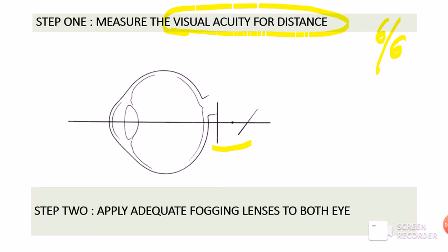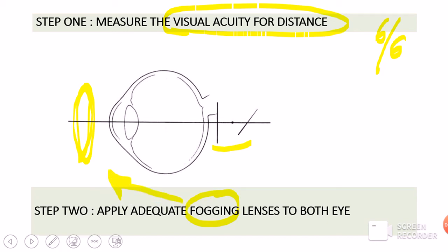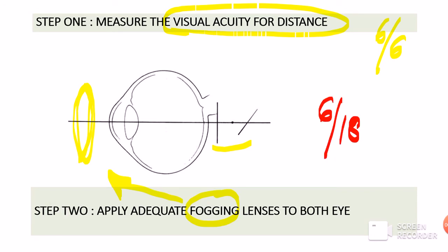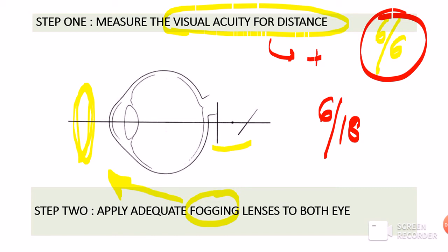The next step is to apply adequate fogging lenses to both eyes. Fogging means applying convex lenses in front of the eye to relax accommodation — it is artificial blurring. We blur the patient's vision from 6/6 down to about 6/18 by adding plus lenses. This is called fogging to 6/18.